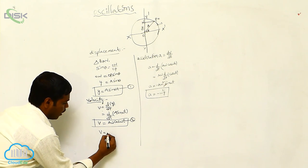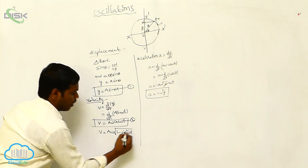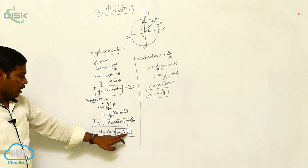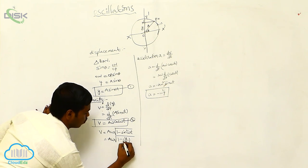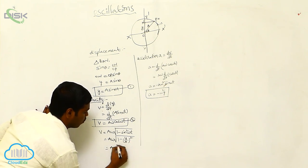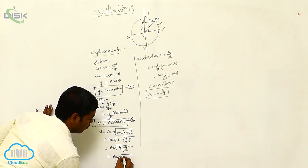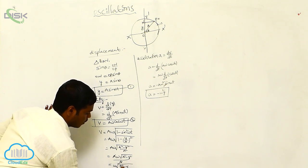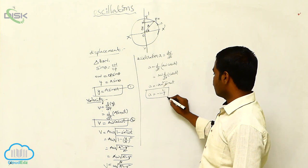The velocity can also be written as v = Aω cos θ = Aω √(1 - sin²ωt). Since sin ωt = y/A, we get v = Aω √(1 - y²/A²) = Aω × √(A² - y²)/A = ω√(A² - y²). This is the velocity of a particle executing simple harmonic motion in terms of displacement.